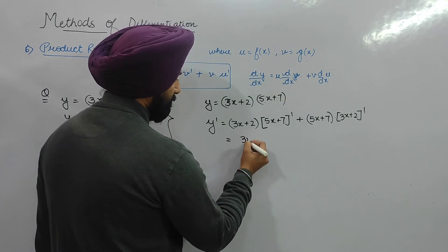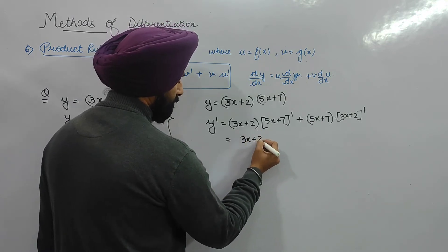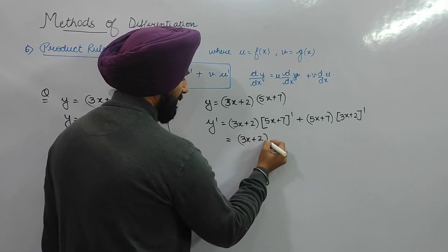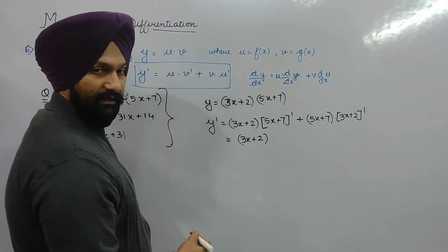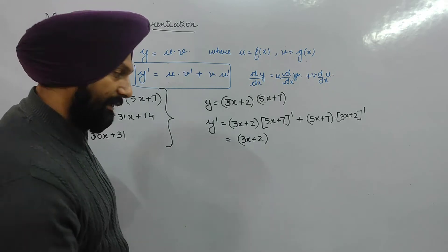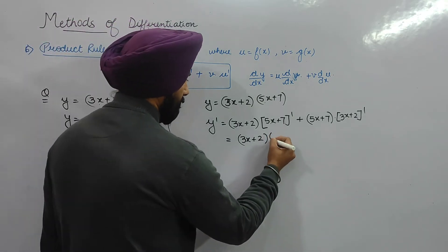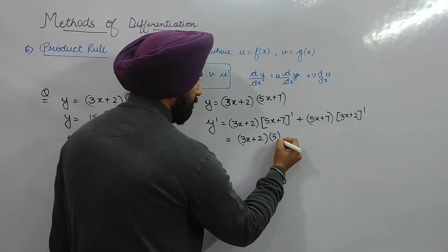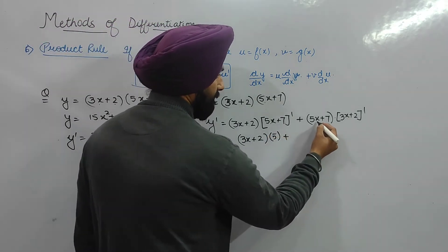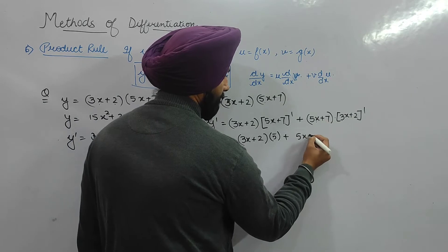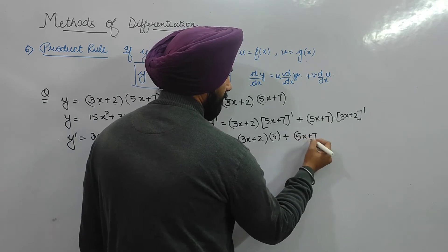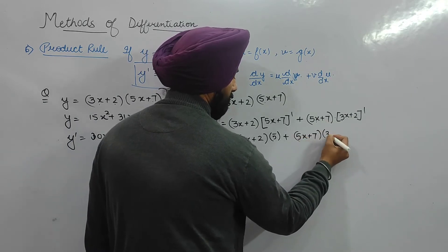So we have (3x + 2) multiplied by 5, plus (5x + 7) multiplied by 3. This gives 15x + 10 plus 15x + 21.